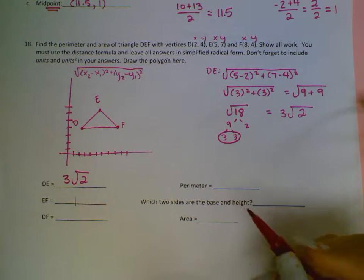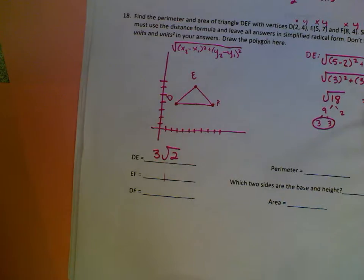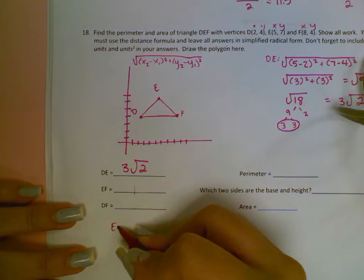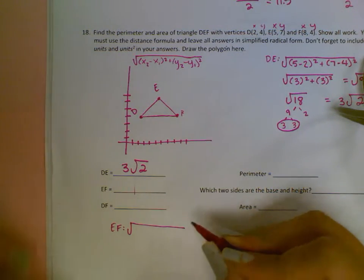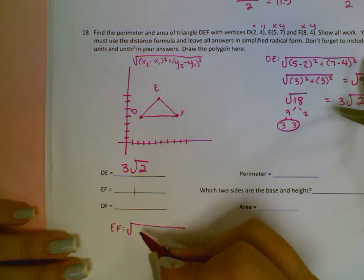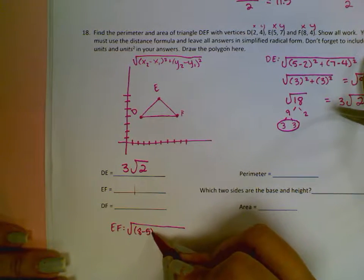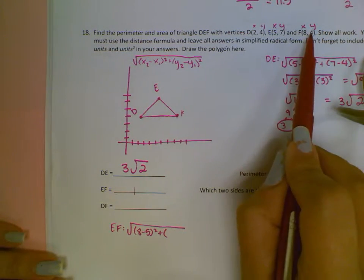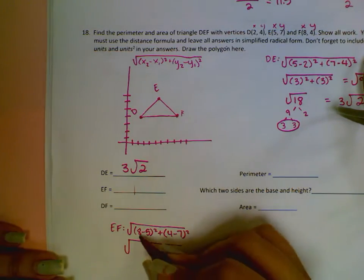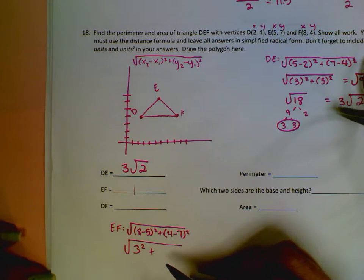Now I need to do EF. I will do EF right here. So we're going to use the distance formula again. EF is 8, 4, and 5, 7. If I do X minus X, I'll do 8 minus 5 squared plus Y minus Y, 4 minus 7 squared.